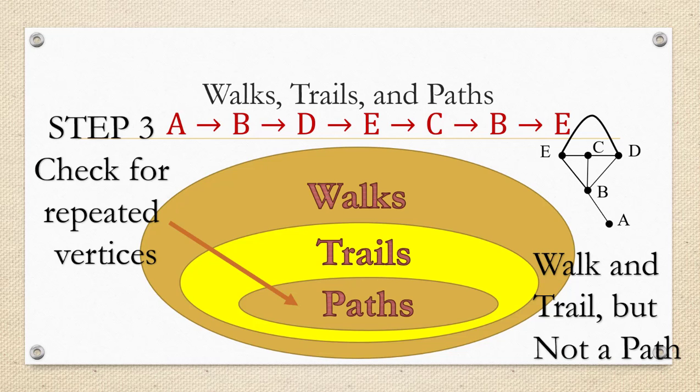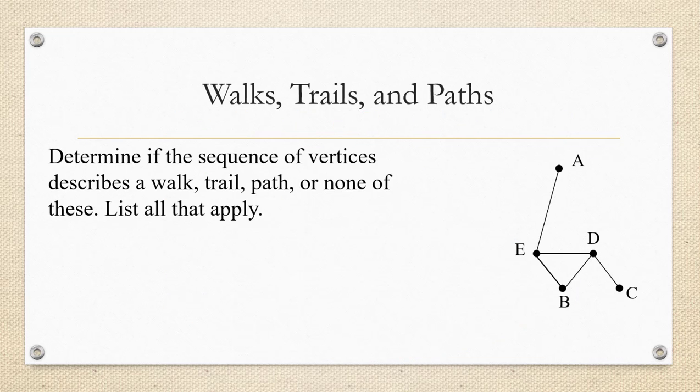All right, so let's look at some more examples and practice identifying when we have walks, trails, and paths. So we're going to determine if the sequence of vertices describes a walk, trail, path, or none of these, and list all that apply.